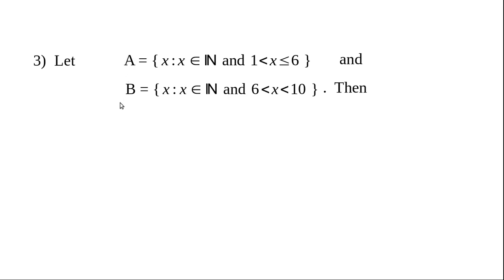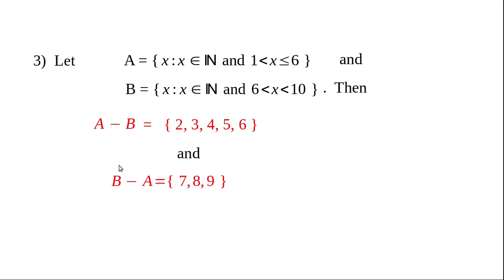These two sets are clearly disjoint — it means A intersection B equals empty set, so no element in A is in B and no element in B is in A. Therefore A minus B equals A itself, that is {2, 3, 4, 5, 6}, and B minus A equals B itself, that is {7, 8, 9}. Note: when A intersection B equals empty set, A minus B equals A and B minus A equals B — when two sets are disjoint.